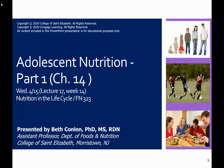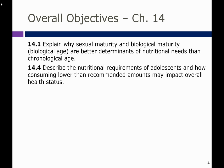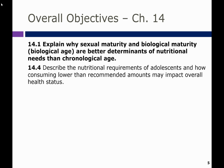Hi everyone, it's Dr. Conlin. In today's lecture we are going to discuss adolescent nutrition. This is lecture one of two on adolescent nutrition. This particular lecture will focus on chapter 14 from your textbook. The overall objectives are 14.1 and 14.4, which are to explain why sexual maturity and biological maturity are better determinants of nutritional needs than chronological age in adolescence, and to describe the nutritional requirements of adolescence and how consuming lower than recommended amounts may impact overall health status.